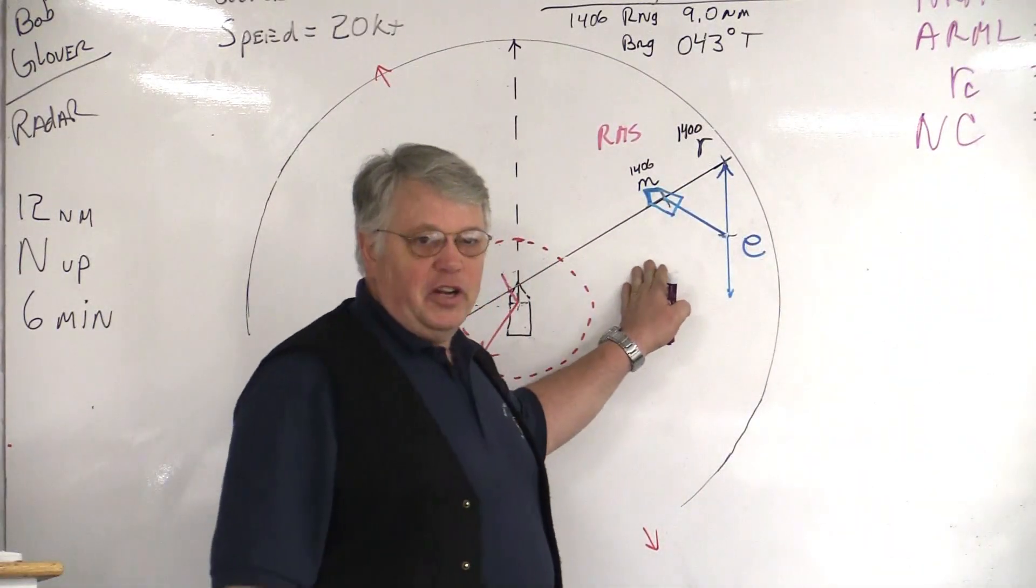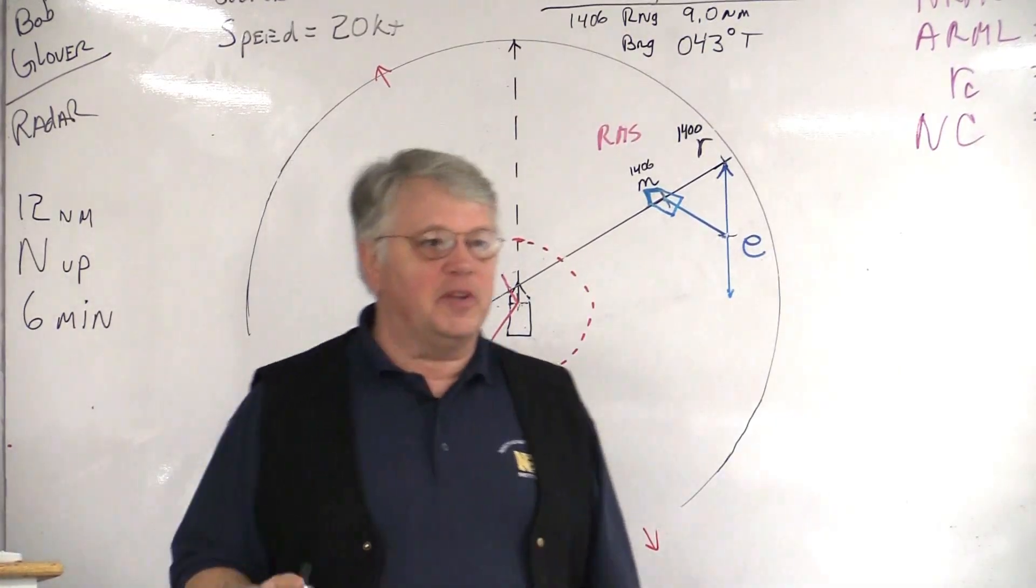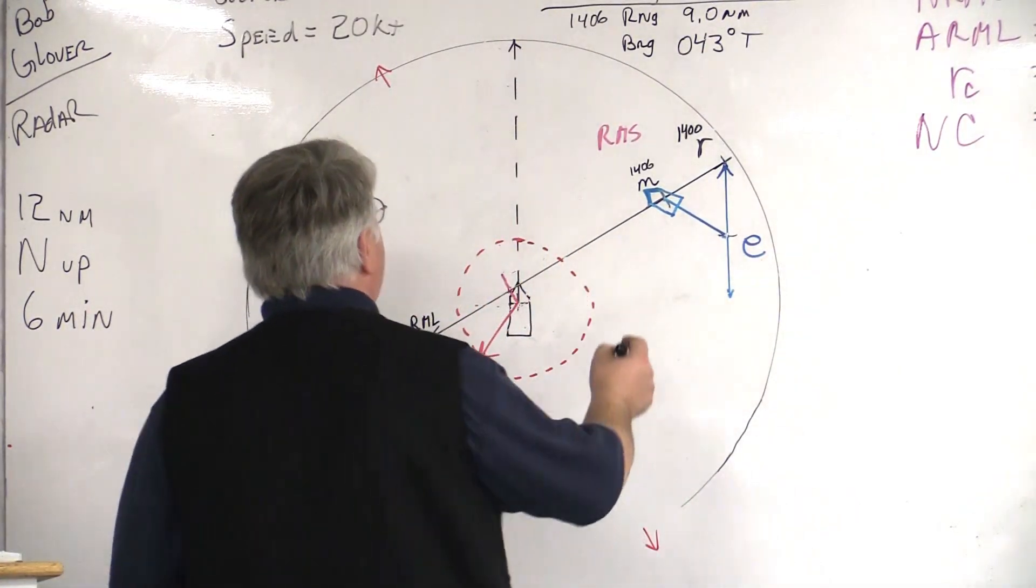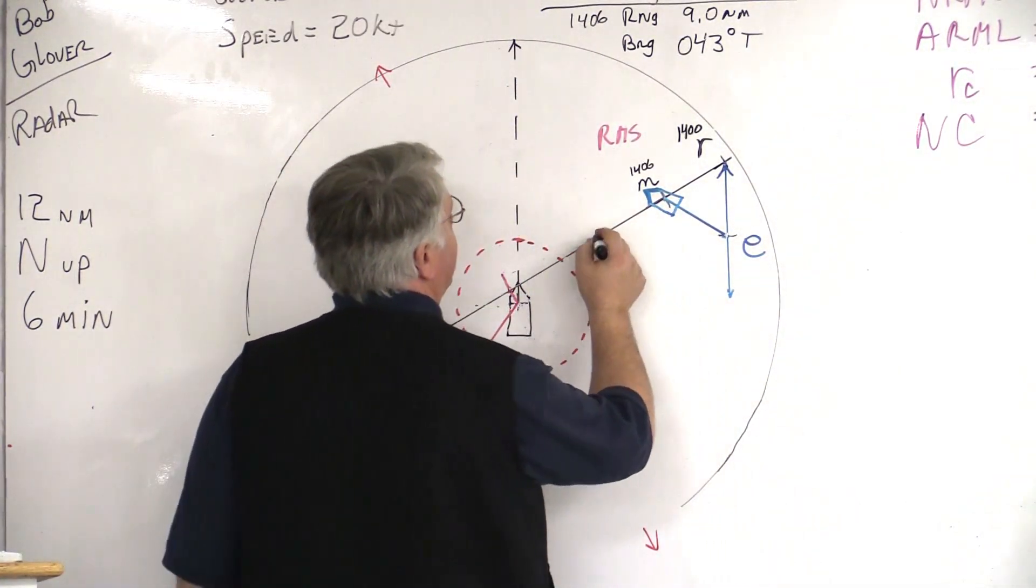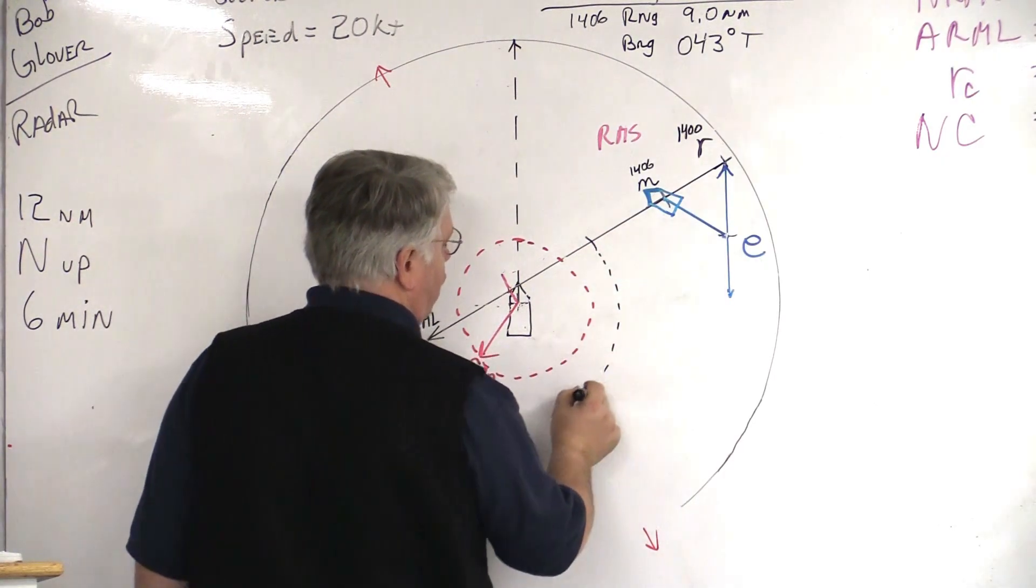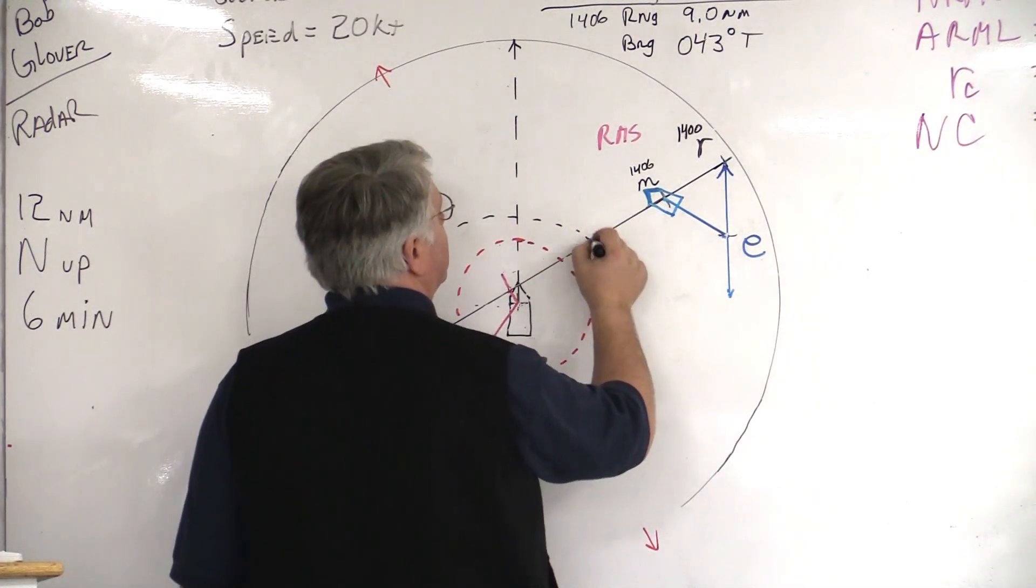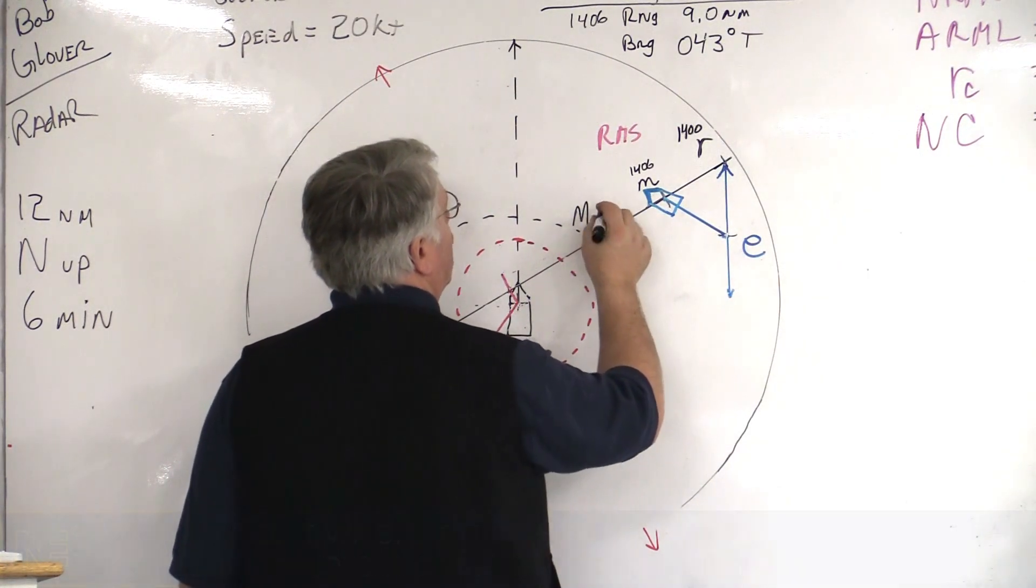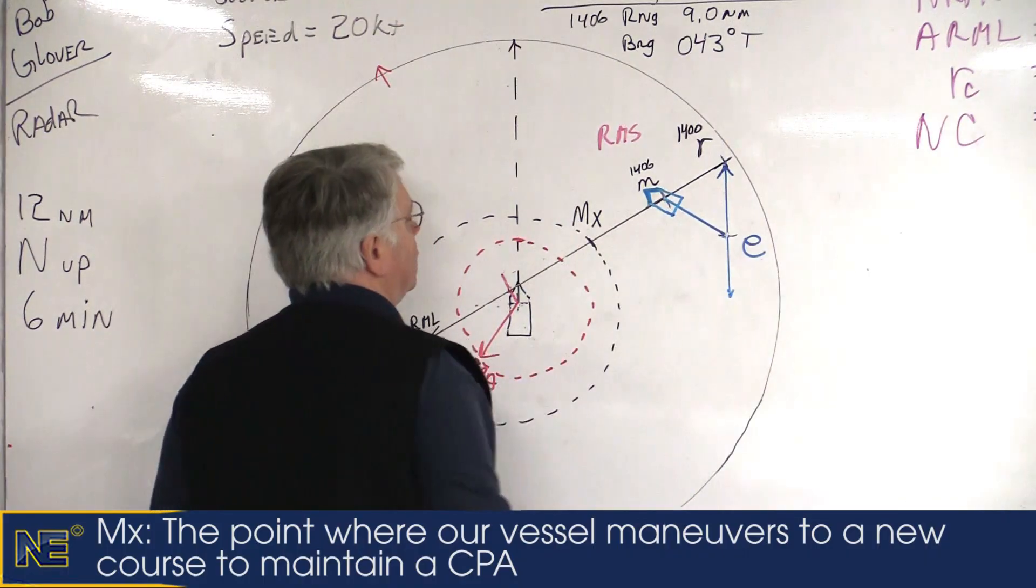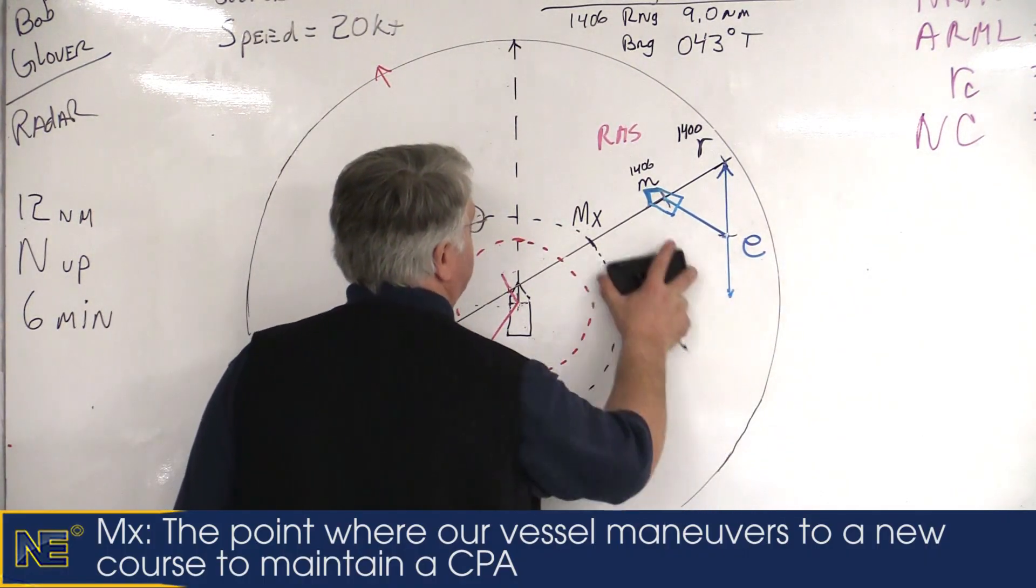But, it's far easier in a practical way to just look at your radar scope and say, okay, when this guy gets to, let's say, three miles, and he touches the three-mile range ring that I have on my radar, that's when I'm going to change course. And, we're going to call that point MX, or the point of execution. That's when I'm going to change course.